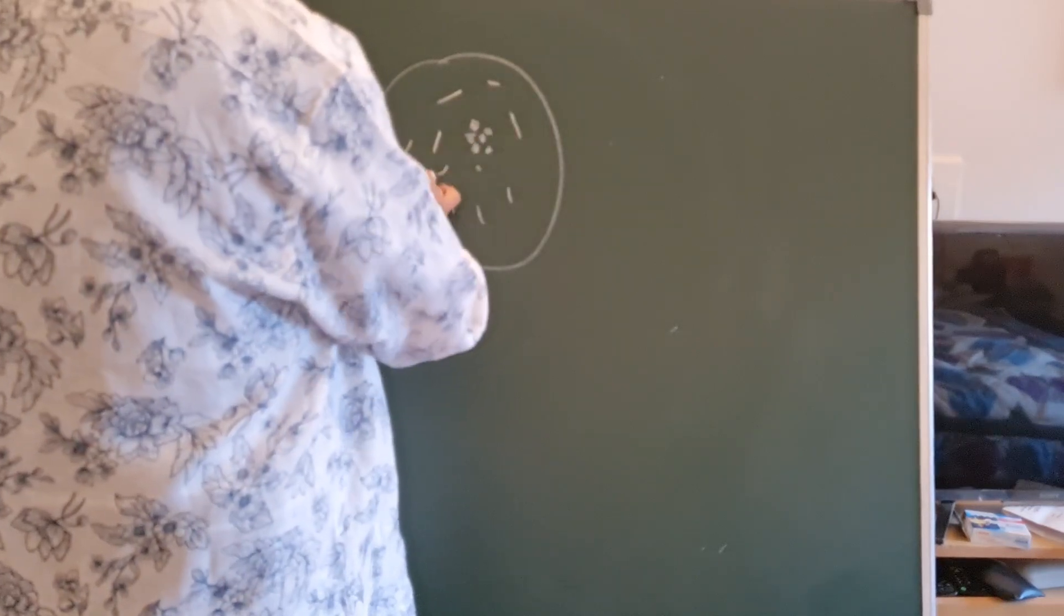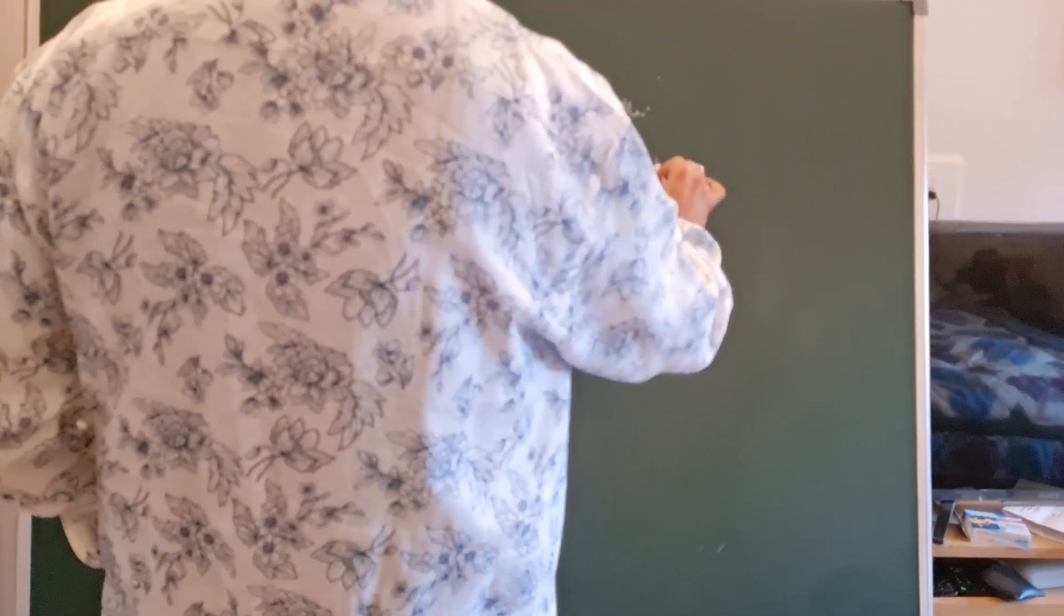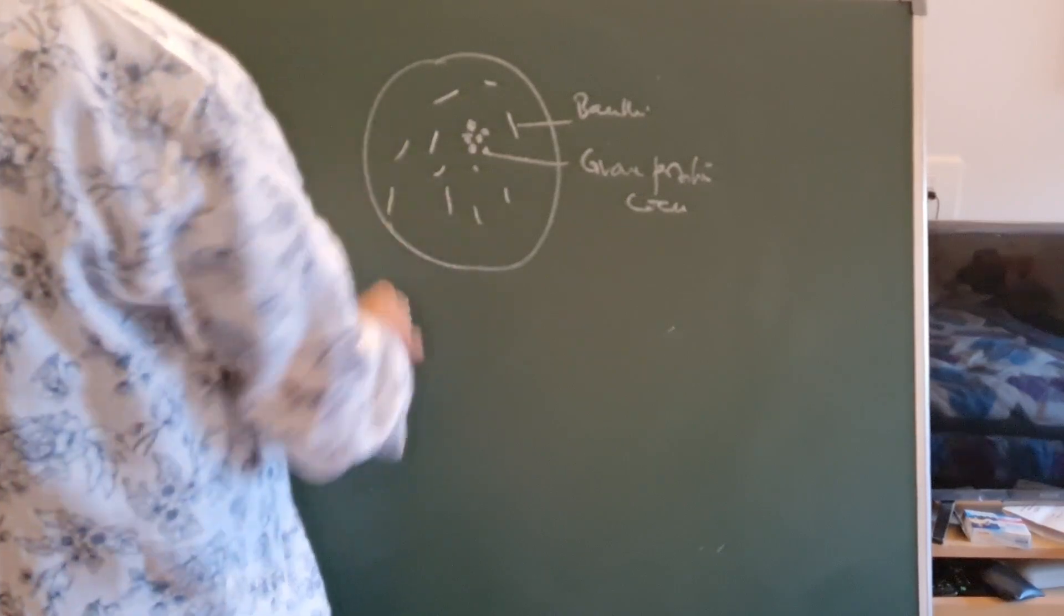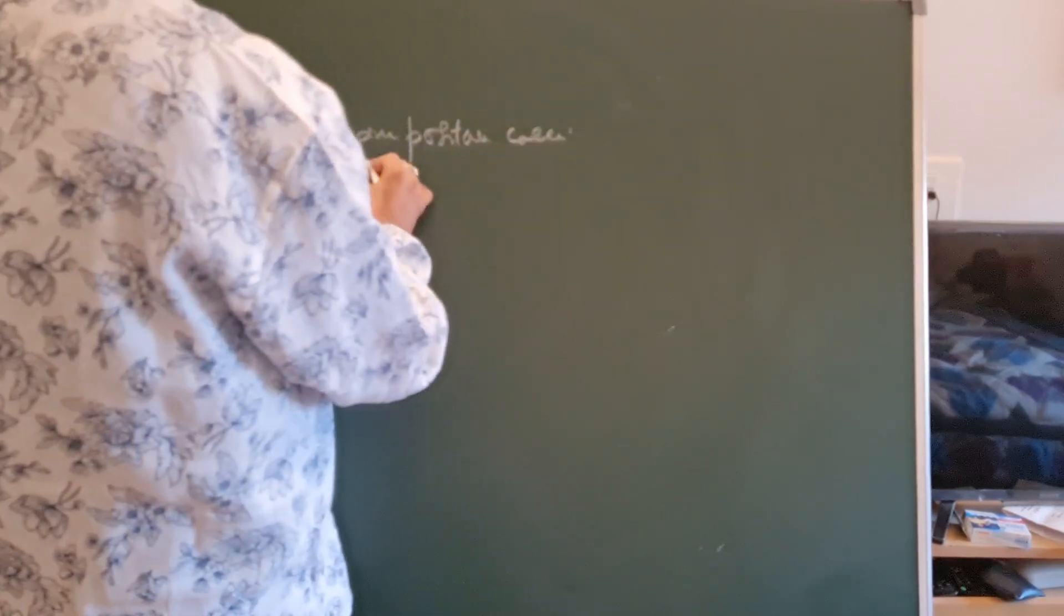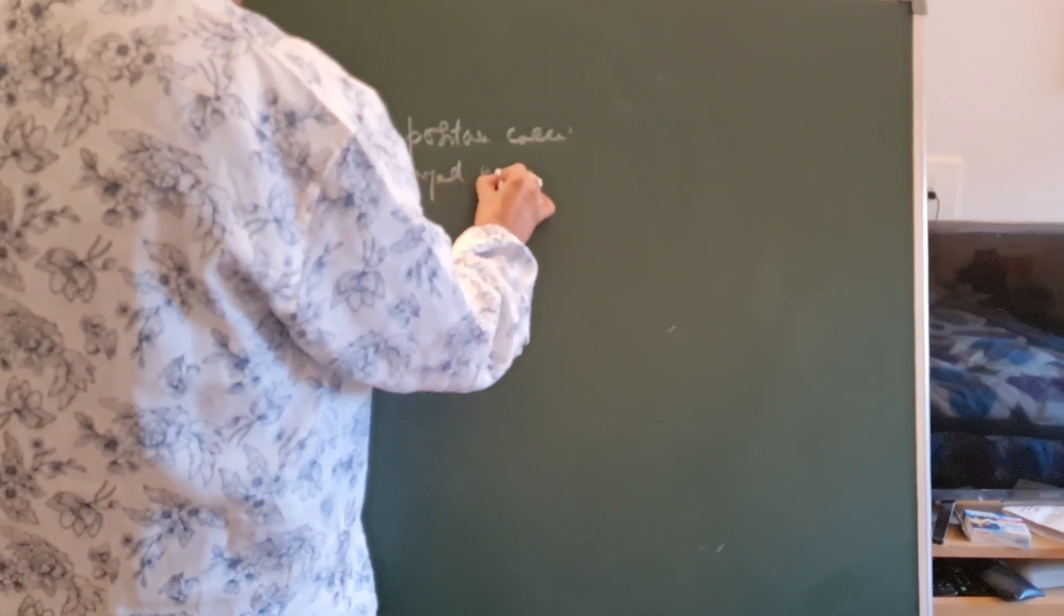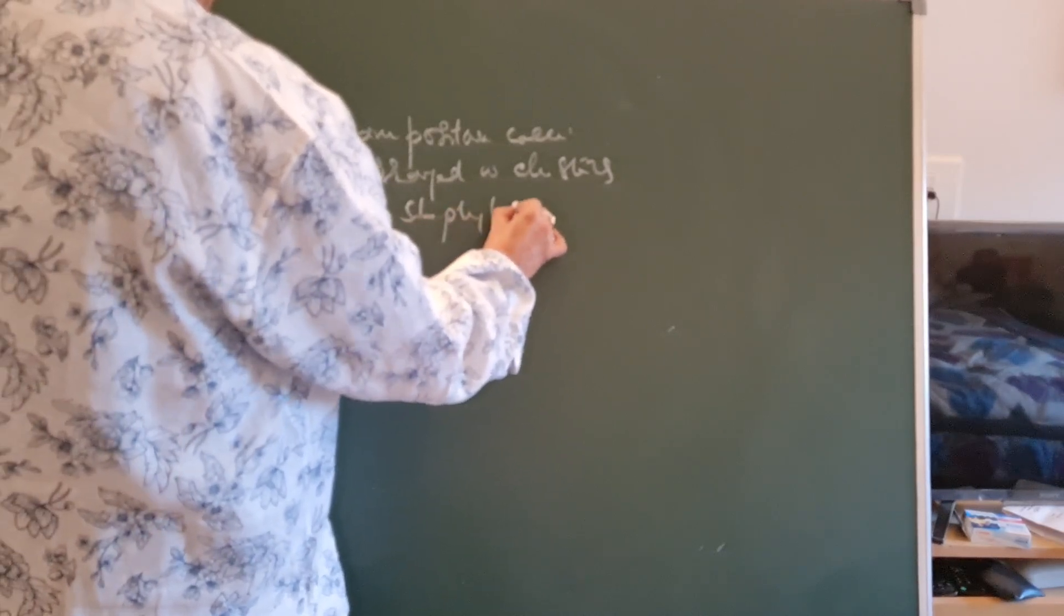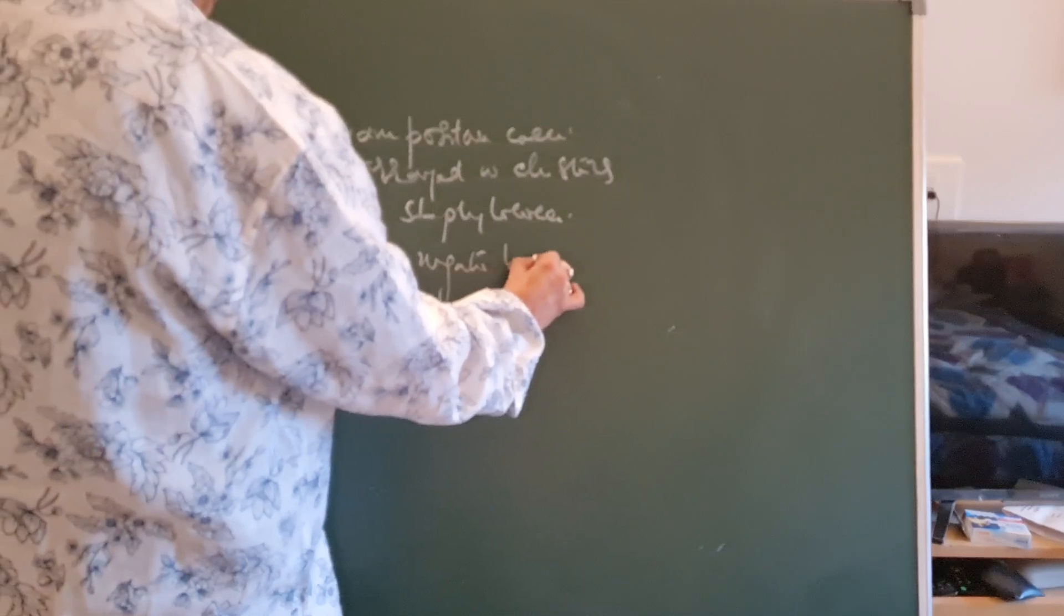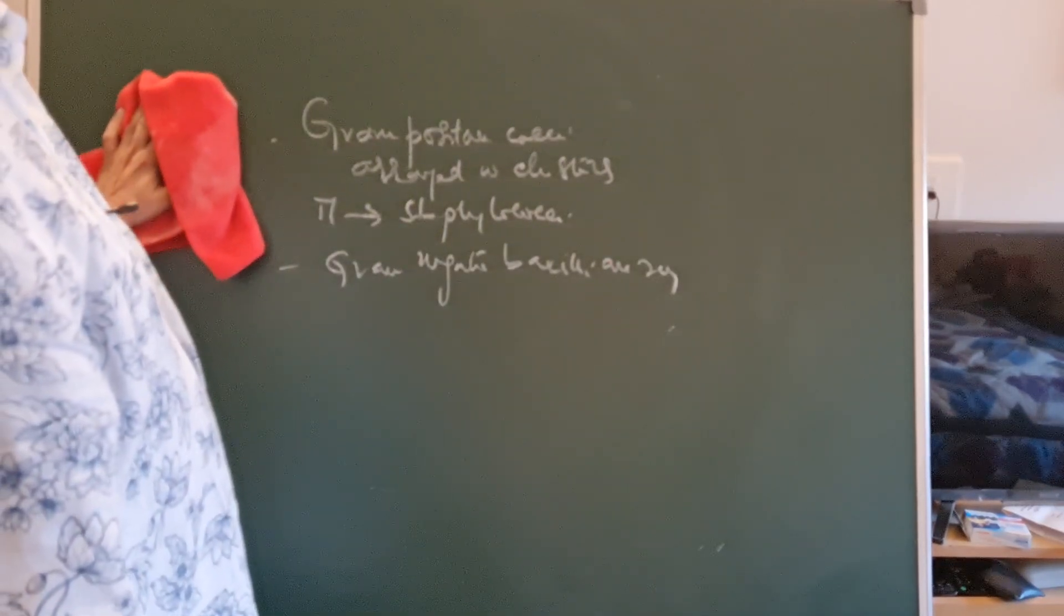Usually we give gram positive cocci in clusters, that is staphylococci. Write a nice diagram and gram negative cocci which are pink in color. Now observation, very important: you have to write gram positive cocci in clusters morphologically resembling staphylococci, or gram negative bacilli are seen. This is the format you have to write the report. Once you write the report, call the examiner.